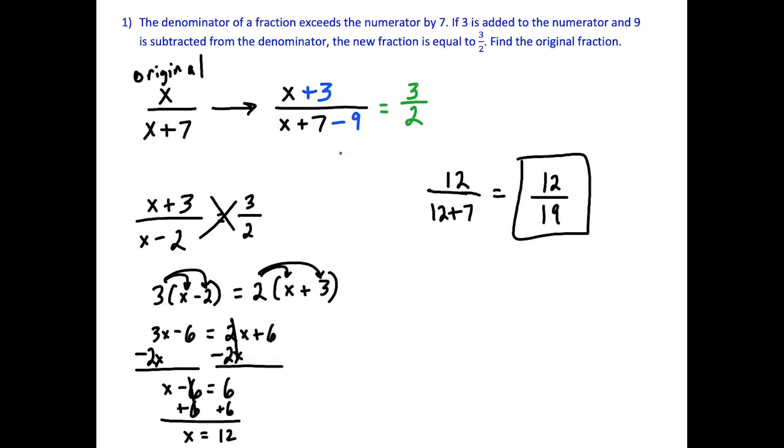But one thing we could do here to check is see if we plug it back in, if it works out to 3 halves when we do the transformation. So if we do the numerator plus 3 over the denominator minus 9, well, this works out to 15 over 10. And if you divide the top and bottom by 5, you get 3 over 2. So this problem does in fact check out. So we could be confident that our answer is 12 over 19.